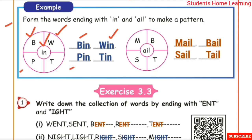For example: M-A-I-L — Mail, B-A-I-L — Bail, S-A-I-L — Sail, T-A-I-L — Tail. These words share the A-I-L ending, forming a pattern.